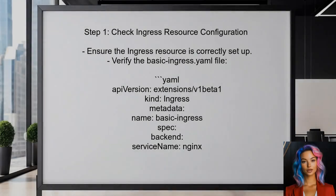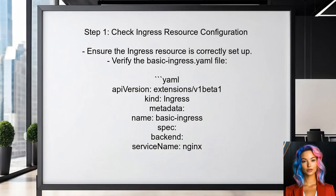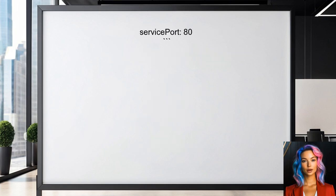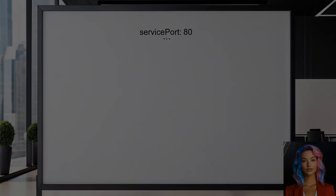To address the 301 moved permanently error, first check the ingress resource configuration. It's important to ensure that the ingress resource is correctly set up to route traffic to the Nginx service.